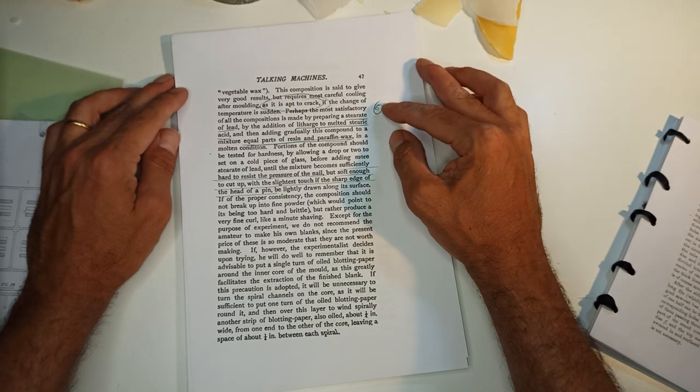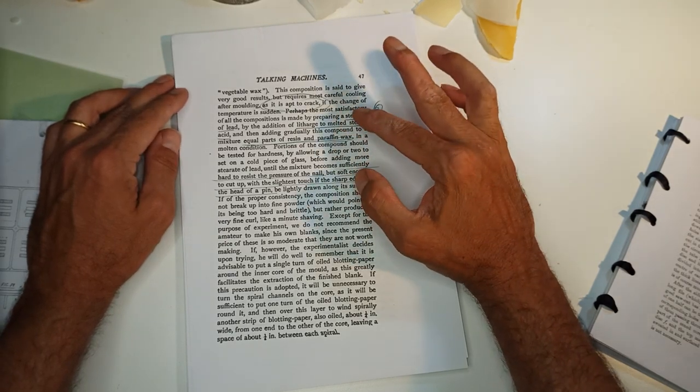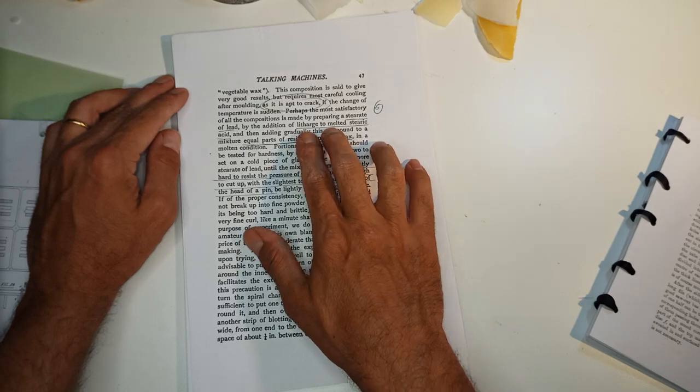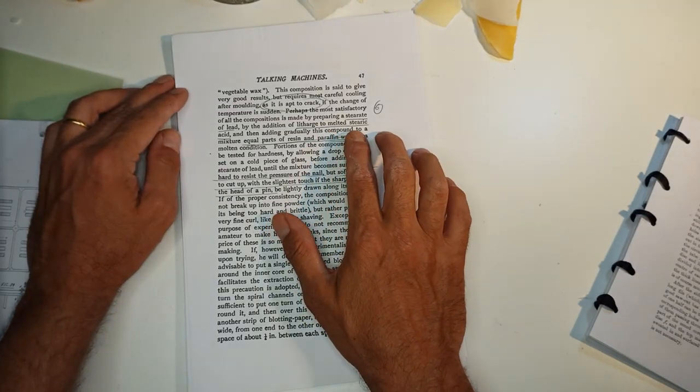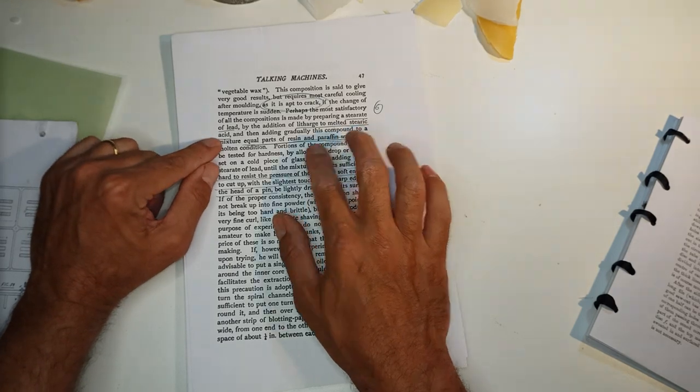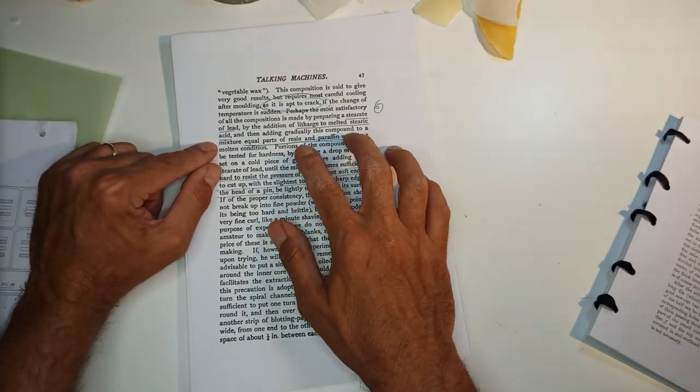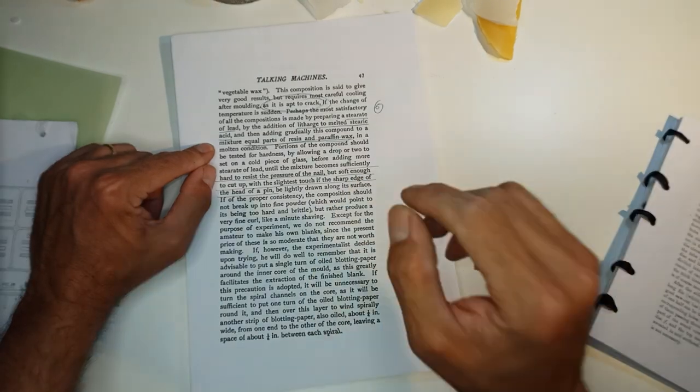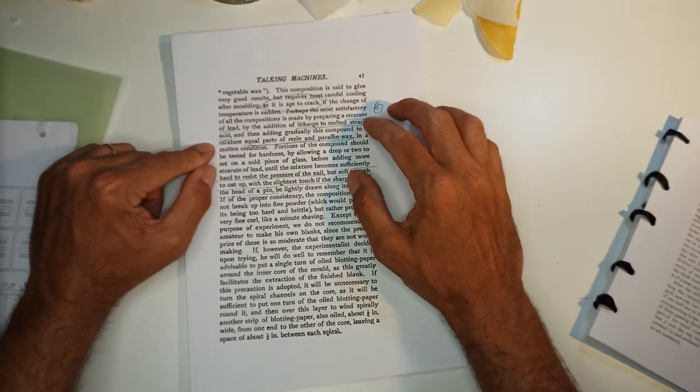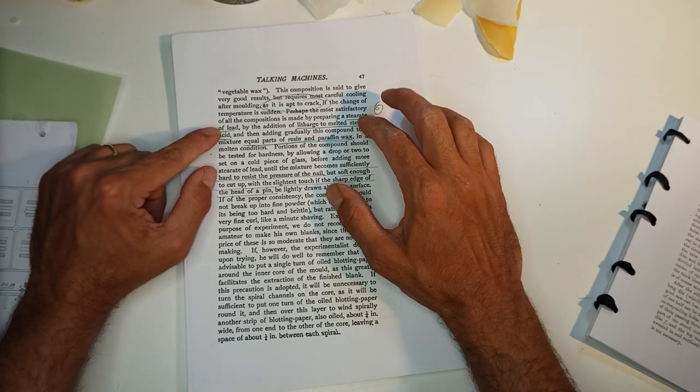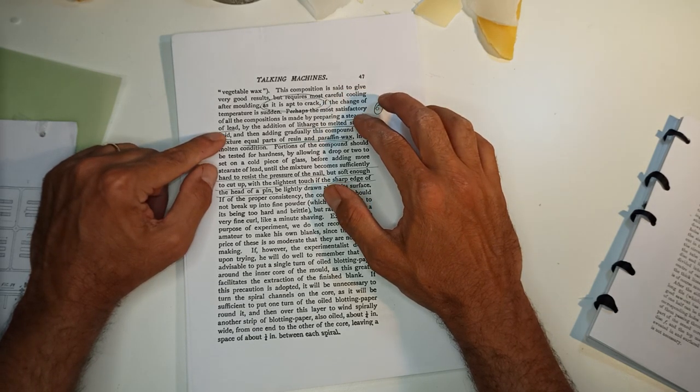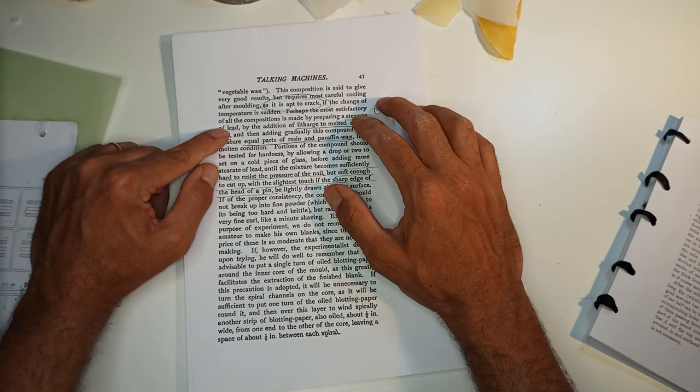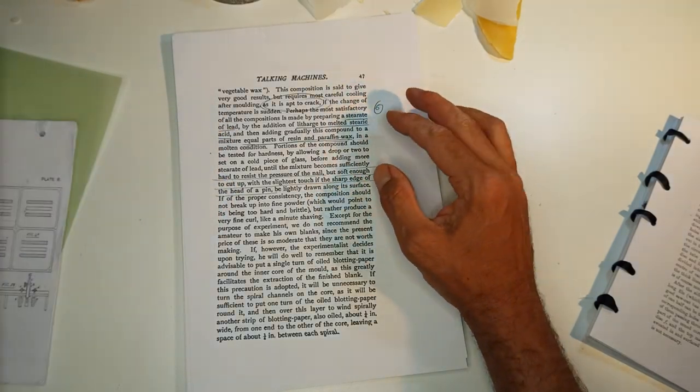And the last one that I think is very similar to the Edison composition is stearate of lead, by adding litharge, same we saw before, to melted stearic acid, and then adding gradually this compound to a mixture of equal parts of resin and paraffin wax in the molten condition. Proportions will be adjusted for hardness. I'm not very fan of using any compound of lead because it's very toxic, and the oxide of lead is super toxic, so not very fan.